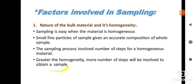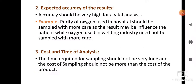The second factor is the expected accuracy of the results. When we do the sampling process, the results obtained should be very accurate, so accuracy should be very high for a vital analysis.